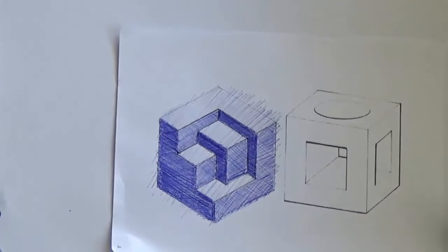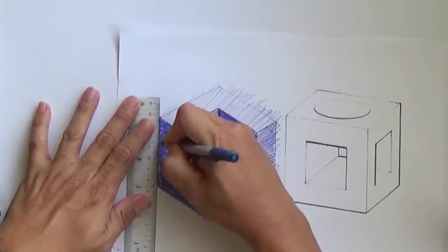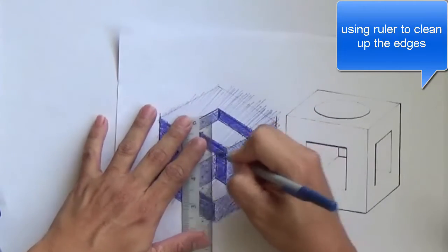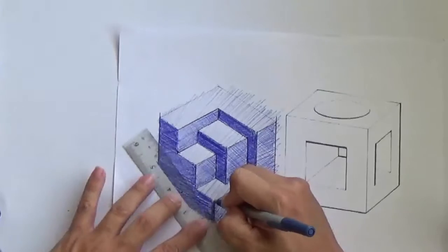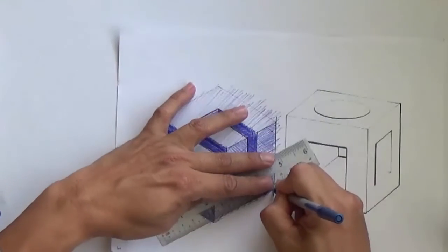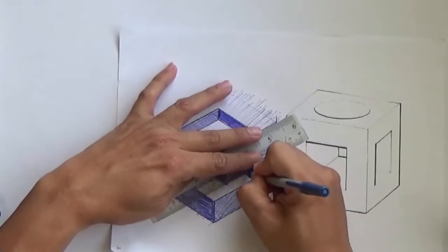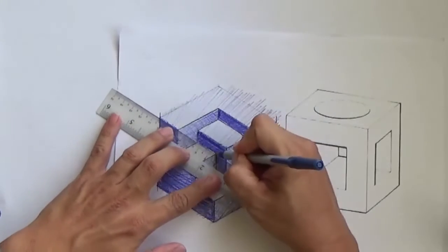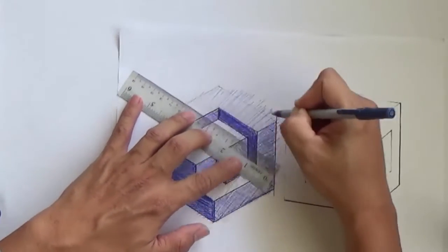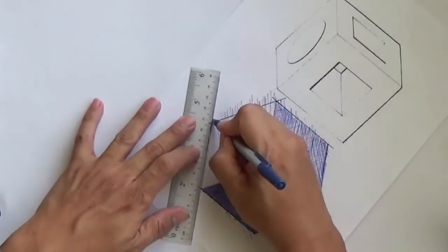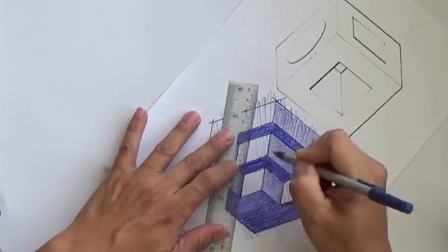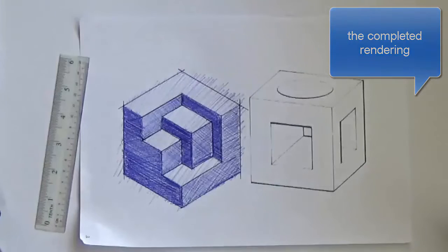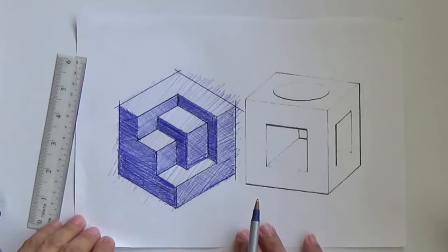So now I'm going to use my ruler to clean up the edges again. The lines will look crisp and nice. So there we have it. Very nicely rendered cube. Hope you can have fun doing this exercise.